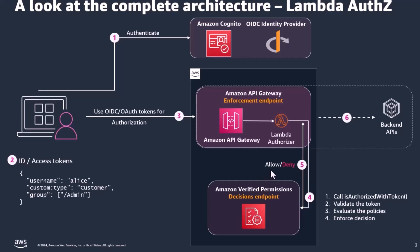When the authorization decision is allowed, the backend APIs are called. If the authorizer returns a deny decision, Amazon API Gateway returns back to the application with the unauthorized response. So now let's see how we can use caching, more specifically decision caching, to reduce latency and cost.